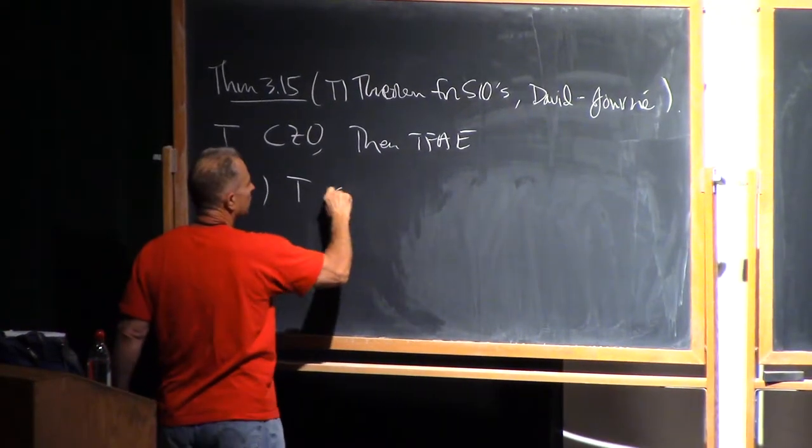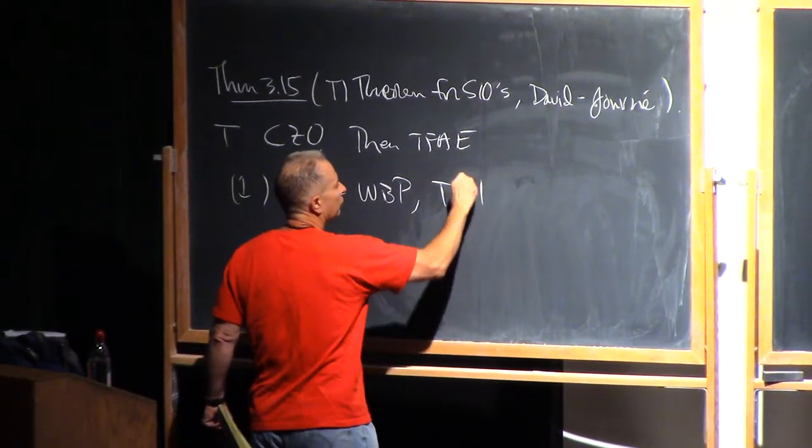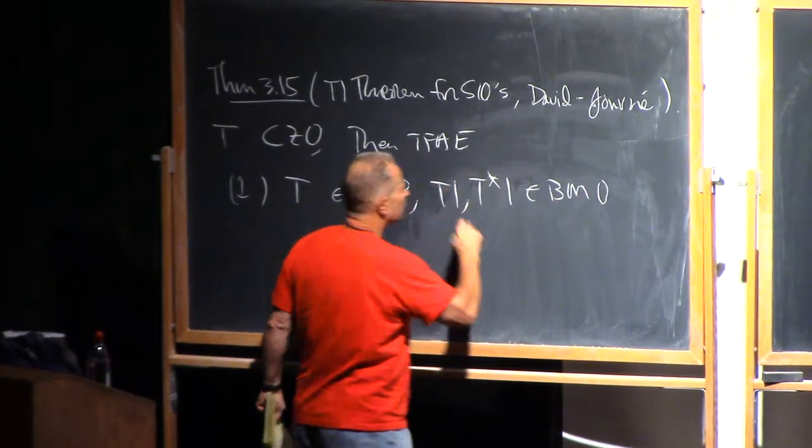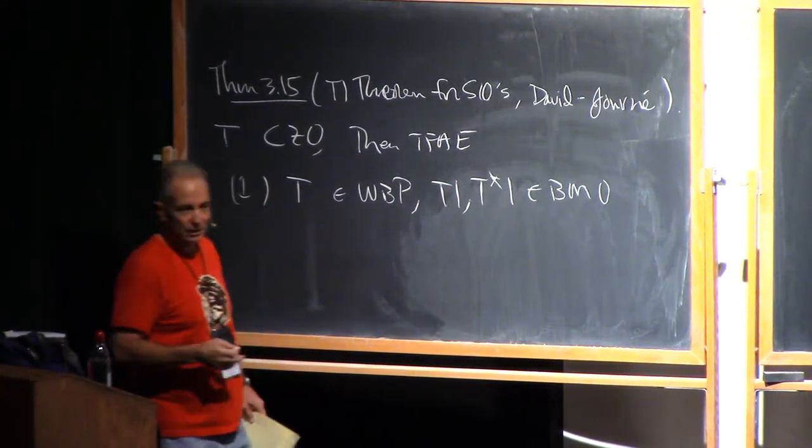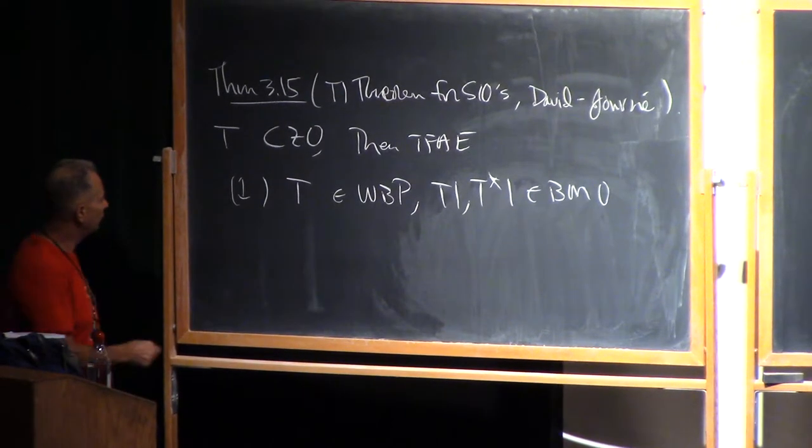That T satisfies the weak boundedness property, and T of 1 and T star of 1 belong to BMO. For now, once again, the convention T star is just the transpose. It's not a Hermitian adjoint. There's no complex conjugation at this point.